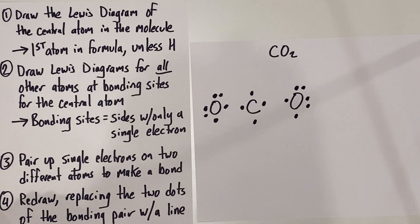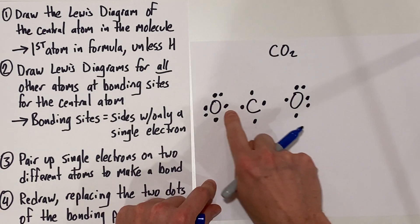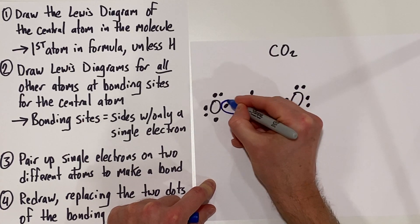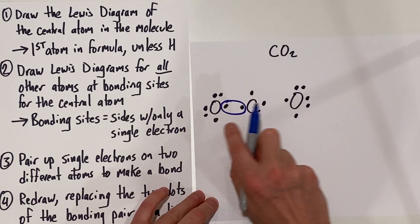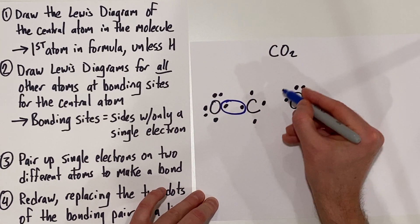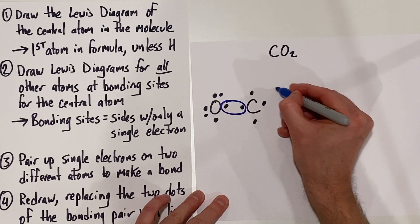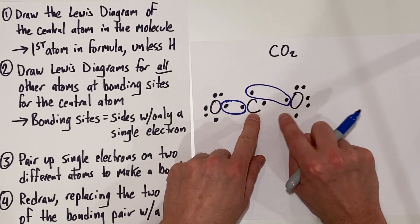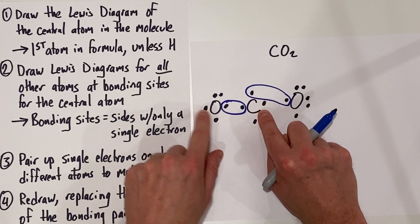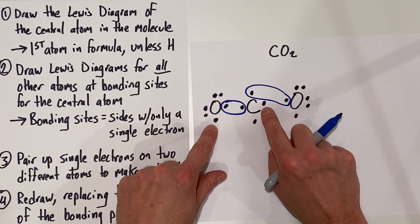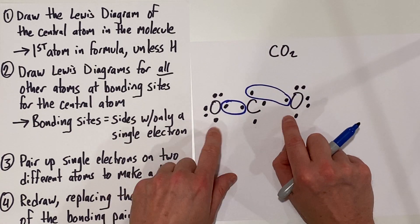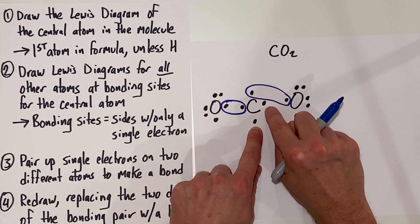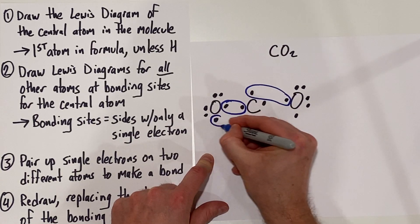Okay, so let's start pairing up some electrons to make bonds. These two right here are going to pair up and make a bond — they can be shared. And look at this — these can be shared as well. If we do a single bond between the carbon atom and each of the separate oxygen atoms, you'll notice we still have leftover electrons. Luckily, there's one leftover electron on each oxygen and two leftover electrons on the central carbon atom, so we can make extra bonds here.